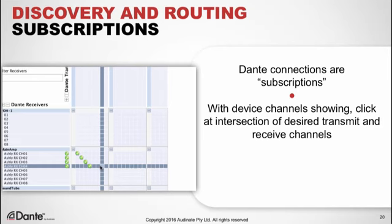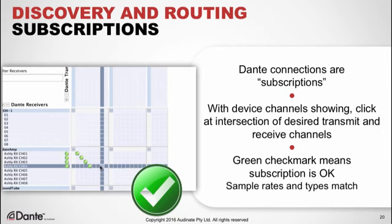This is essentially a big spreadsheet — we can see all available channels on every device and the intersections of those channels. In order to connect, our devices must be using the same sample rate and bit depth. These devices are both set to the default 48 kHz and 24-bit depth. To subscribe, we simply click at the intersection on the grid. A green checkbox appears, meaning we're connected. If sample rates and bit depths don't match, we see an error message instead of the green checkmark.